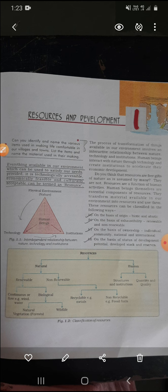Look at figure 1.1 — the interdependent relationship between nature, technology, and institution. Here, in this triangle, one part is the physical environment, the second corner is technology, and the third is institution.